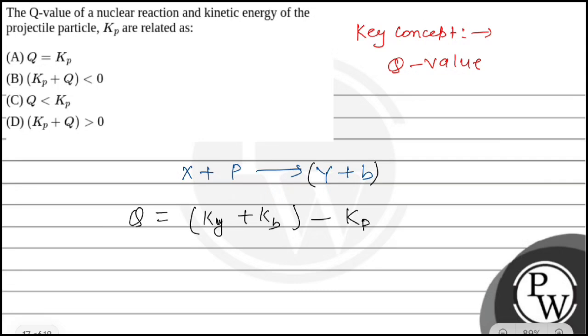So from here we can write Q plus Kp equals Ky plus Kb. And what is this? This is kinetic energy of Y and b, so this will be greater than zero.